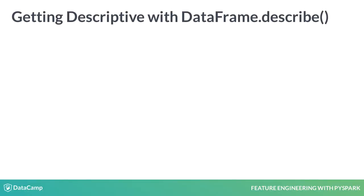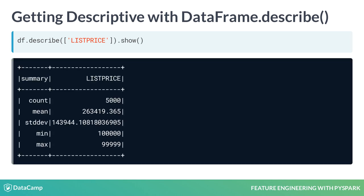To get started with understanding your data, take a peek at each column to see what they contain. The describe function provides some bare-bone basics of count, mean, standard deviation, min, and max. You can run it on the whole data frame, a single column, or a list of columns. Remember to add show at the end if you wish to immediately display the results.